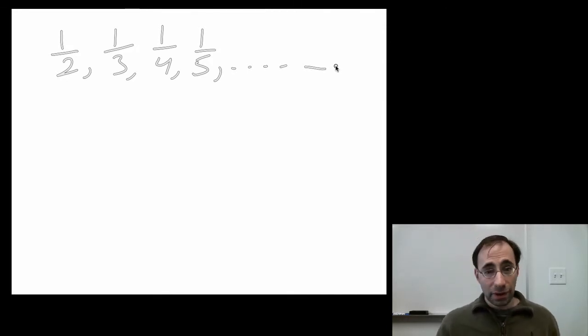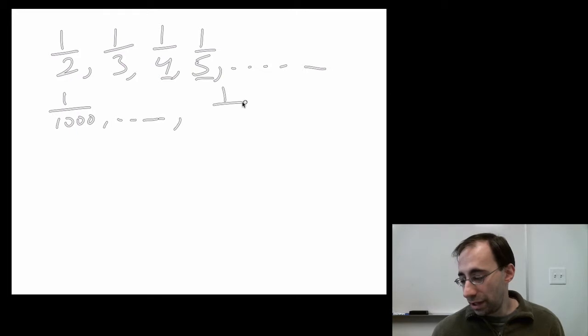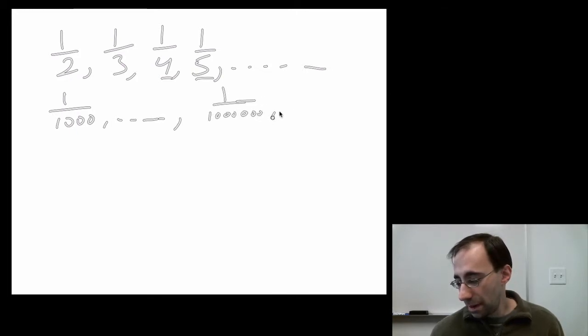Well, without doing any kind of math, you can kind of guess, right? There's a two, a three, a four, a five, and so on. If I keep adding one to the denominator in every case, I'll eventually get a thousand, I'll eventually get a million, and so on. You can see what happens. This gets closer and closer to zero.